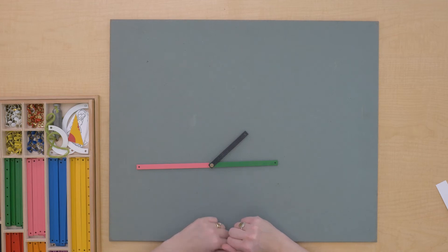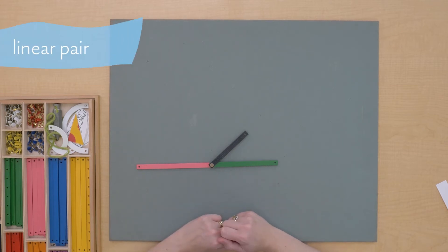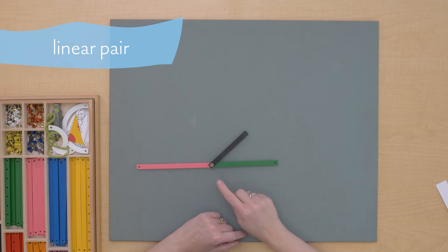When two angles share a side and come together to make a straight angle, we call them a linear pair. This is a linear pair of angles.